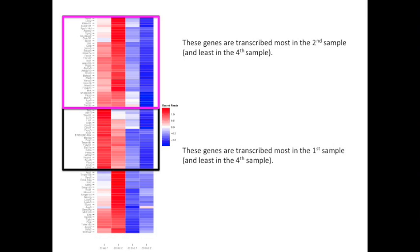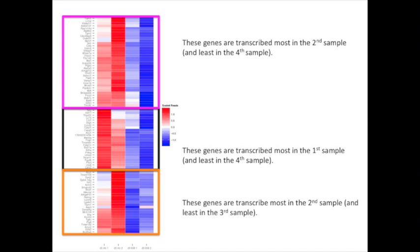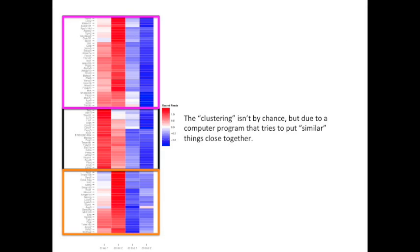This grouping, or clustering, makes it easy to see genes that are transcribed most in the second sample and least in the fourth sample. These genes are transcribed most in the first sample and also least in the fourth sample. The clustering isn't by chance, but due to a computer program that tries to put similar things close together.